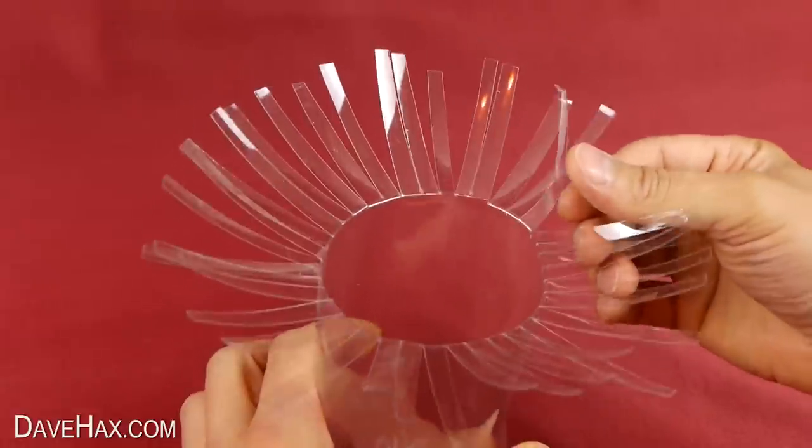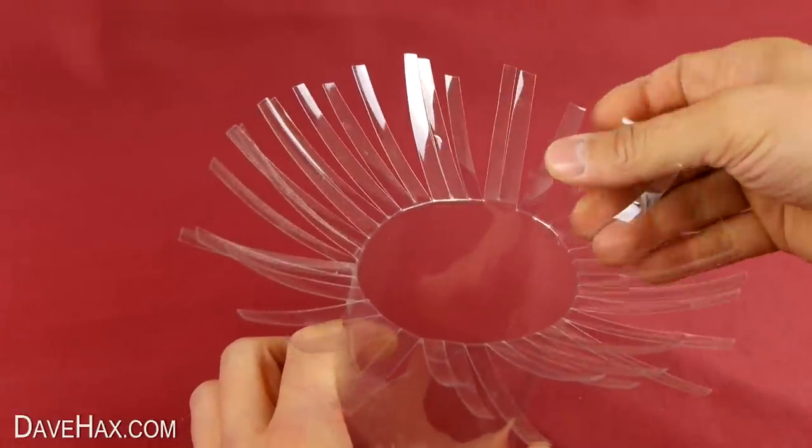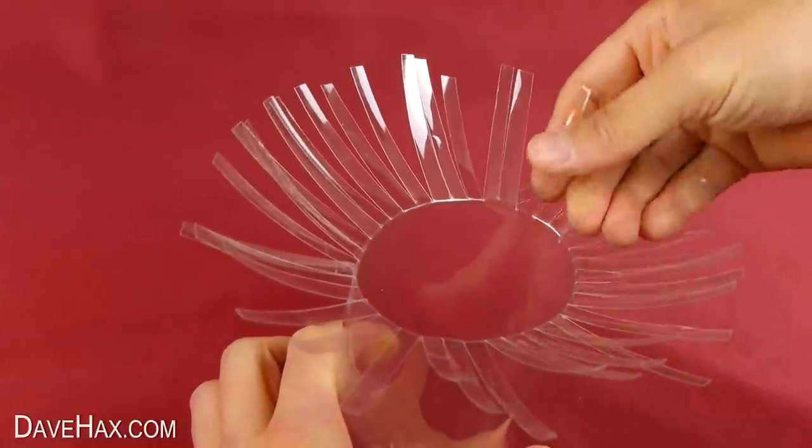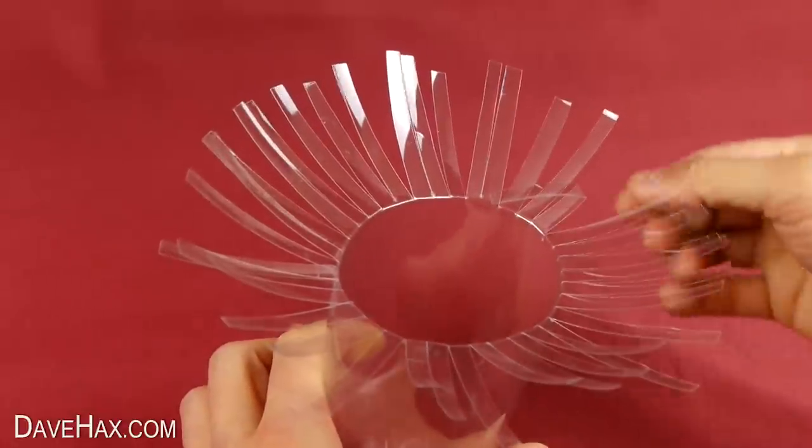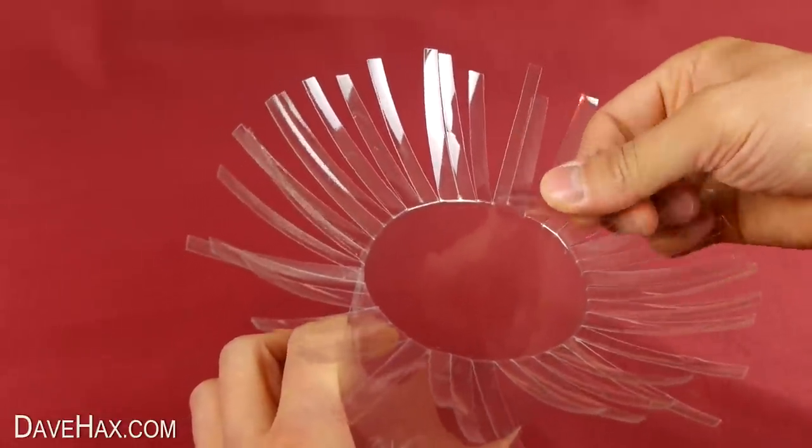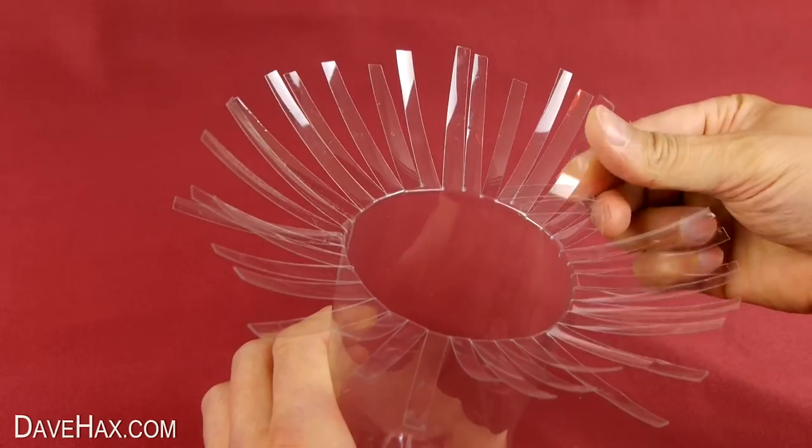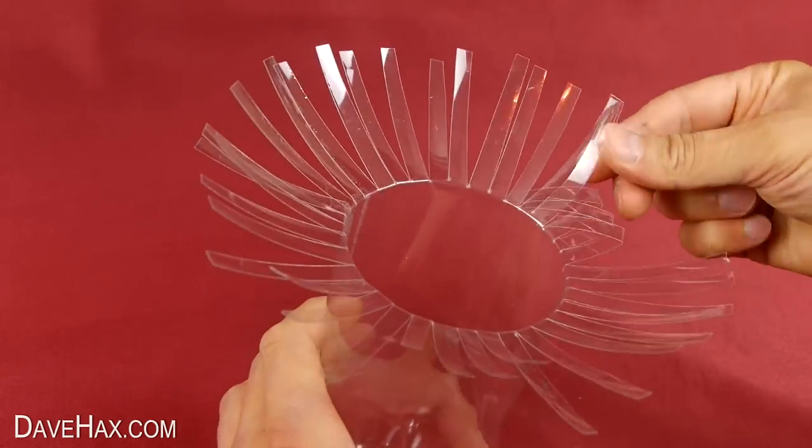Take one of the strips and bend it over the top of the one next to it and underneath the one next to that. So it's over the first one and under the second to hold it in place. We need to keep going like this all the way around the bottle.